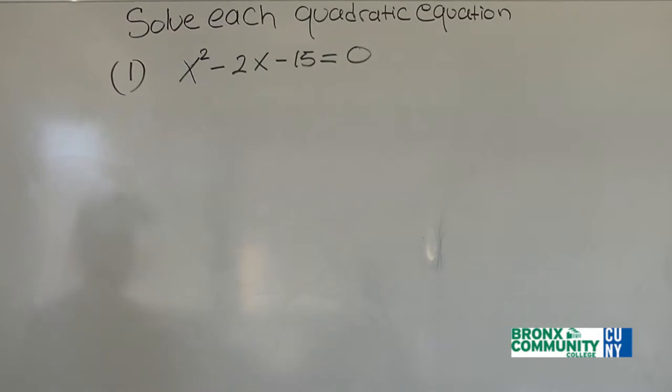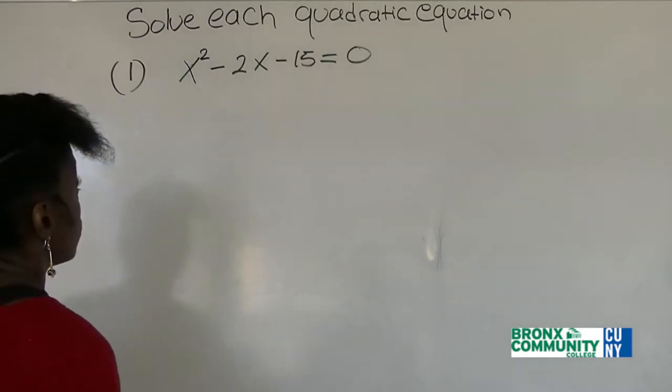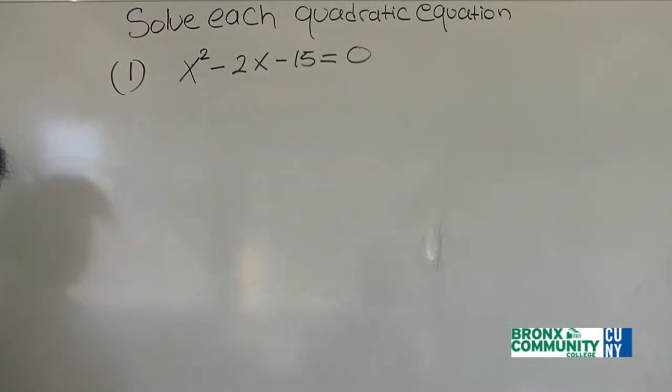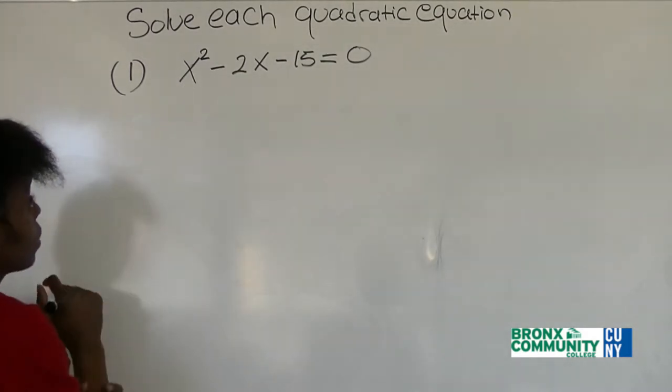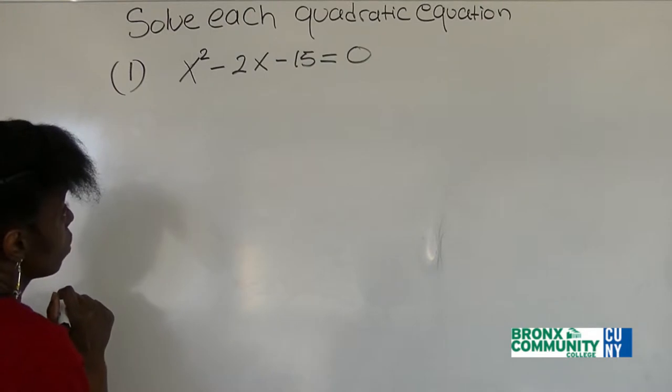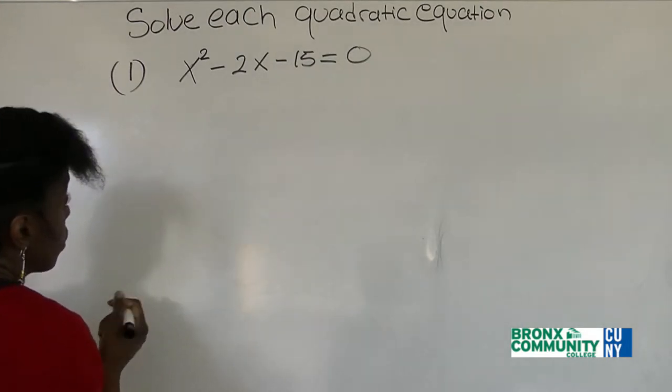All right, how do we solve this quadratic equation? When we solve quadratic equations, first note that the coefficient in front of the x squared term is 1. So we're going to use the trial and error method here.